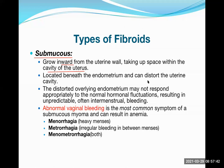Submucosal fibroid can lead to recurrent abortion because there is no space inside the endometrial cavity for growth of the baby. Sometimes even conceiving is difficult — it can lead to infertility. If the leiomyoma is blocking the opening of the fallopian tube, that is a big problem, and even continuation of pregnancy can be an issue.